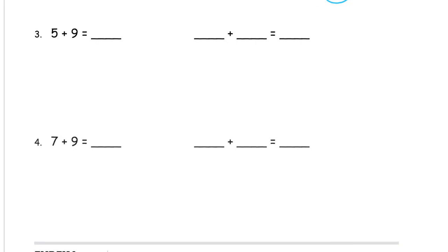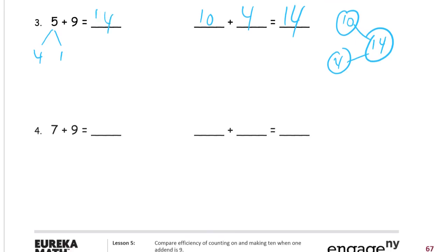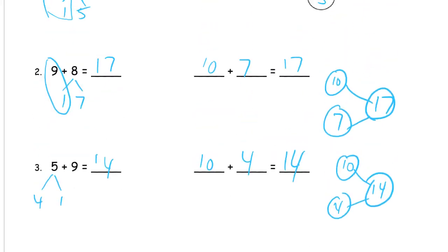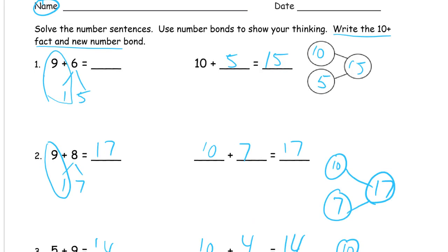And you see this, 5 plus 9. You should be thinking right away, oh, that's a 1 and a 4. So it's really a 10, 4. 10 plus 4. Our new parts and our total is 14. Our whole is 14. So this is 14. I'm going to go back and fill these in, too. That's a 17. And this was 15.